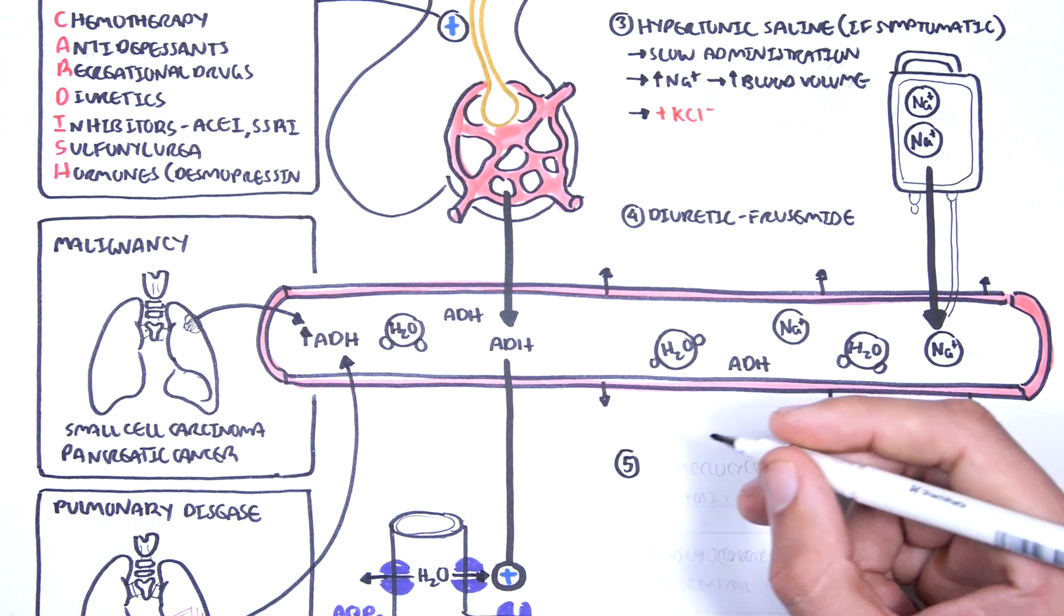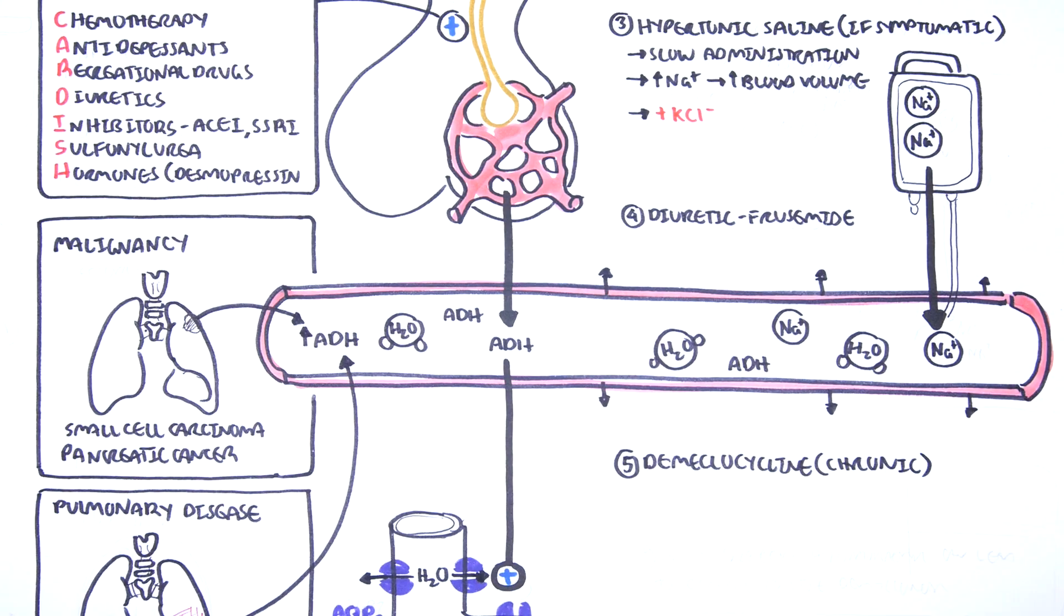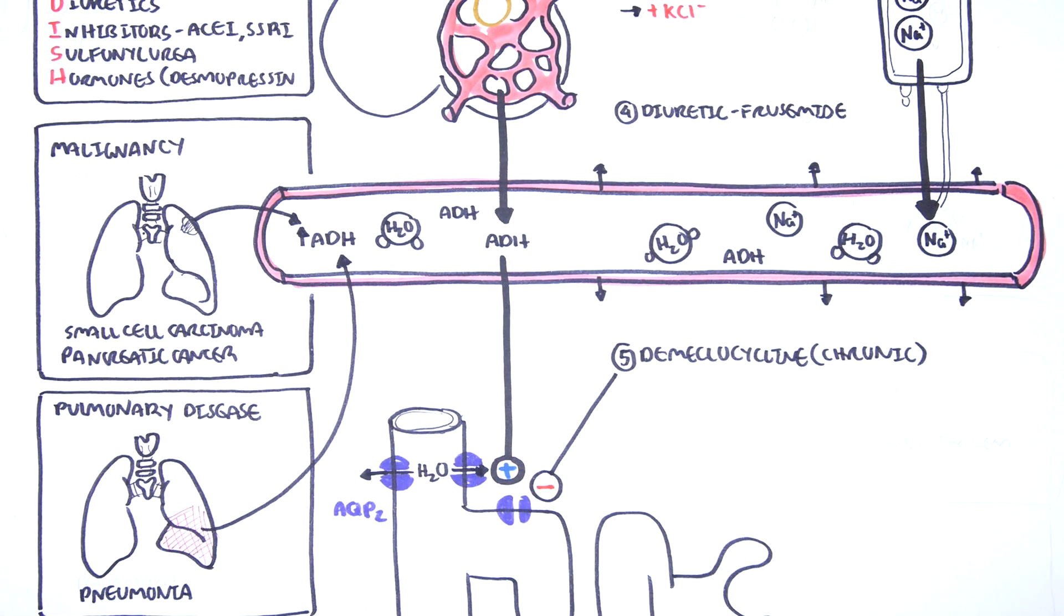Finally, demeclocycline can be given. Demeclocycline is mainly used in chronic hyponatremia. Demeclocycline inhibits the renal action of antidiuretic hormone by inhibiting its binding onto the ADH receptors.